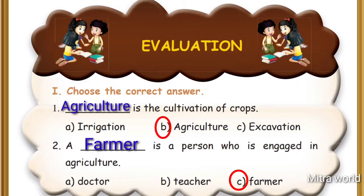Question 1: ___ is the cultivation of crops. Options are: Irrigation, Agriculture, Excavation. Answer: Option B - Agriculture. Agriculture is the cultivation of crops.